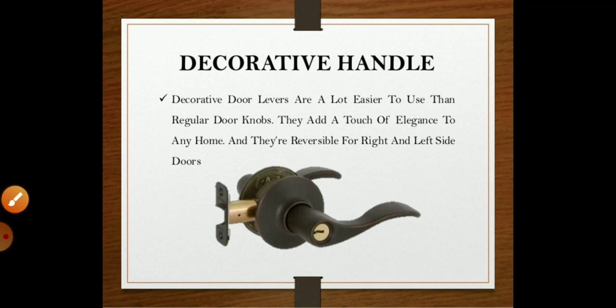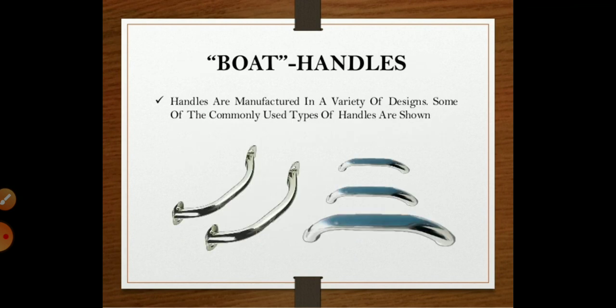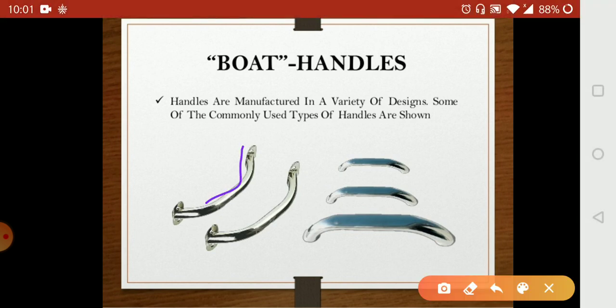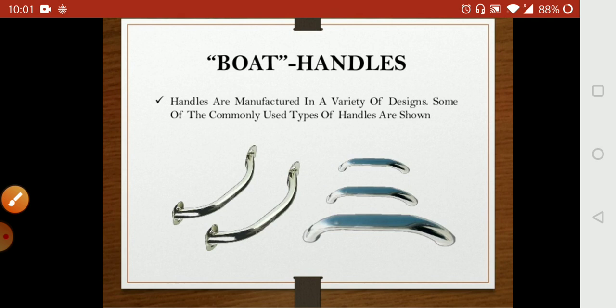The next is decorative handles. For regular doorknobs it is easy, but more than that, decorative handles are used. They give an elegance feeling to the doors, and they are reversible for right and left side doors. The next is the boot handle — you can see the shape of the handle is just like a boot, so it is called a boot handle. It is also manufactured in various varieties of design.